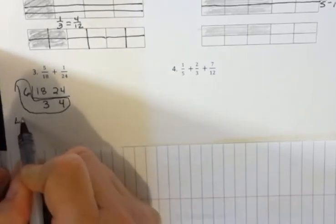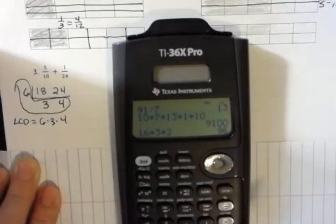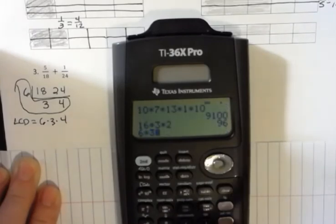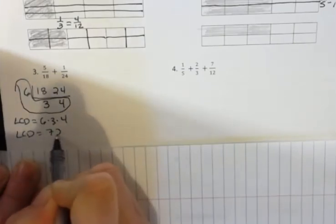So, our LCD here is 6 times 3 times 4. Now, 6 times 3 times 4 is 72. So, our LCD is 72.